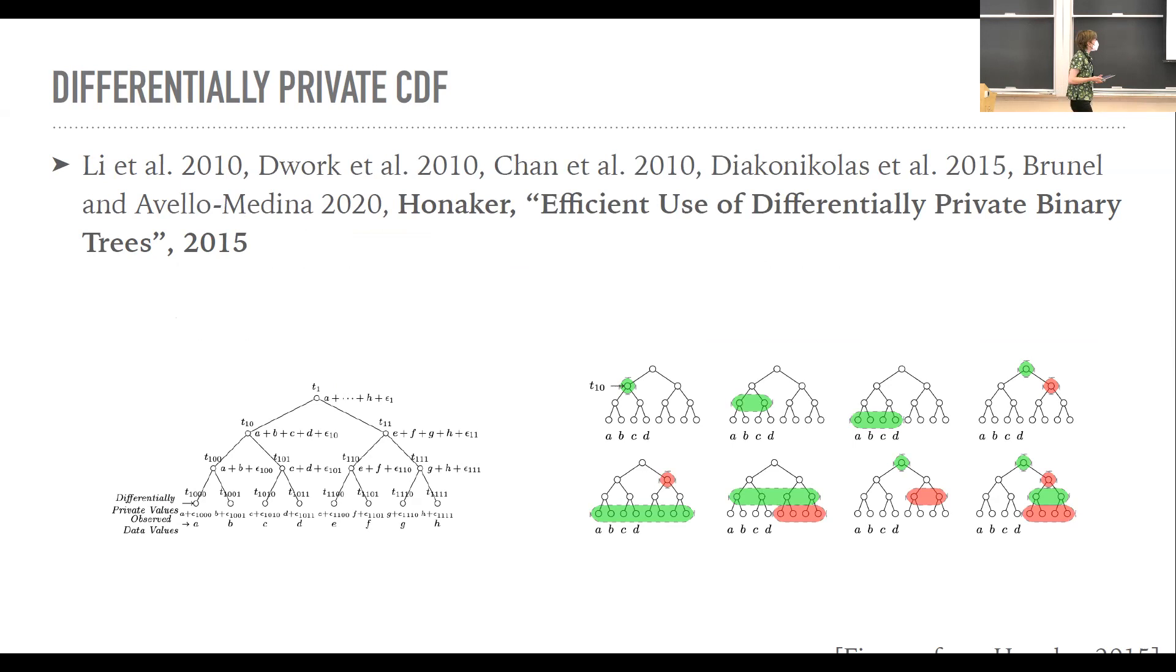Alright, so there's many works on differentially private CDFs. We use specifically James Honecker's 2015 work on this, which basically computes the CDF using a binary tree. So you compute essentially a histogram at multiple levels of granularity as represented in this tree form. And then you can leverage the fact that at every level of the tree, those different sums should, the sums at the bottom of the tree should sum up to the values of the nodes right above them. Even though, I mean, of course, you've added noise, so they won't. But you can use a nice post processing to get a very clean collection of the underlying counts of your histogram. And then from there you can get a CDF.